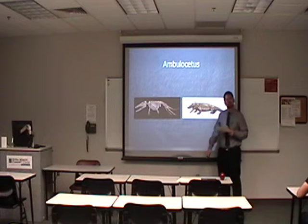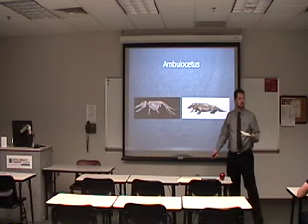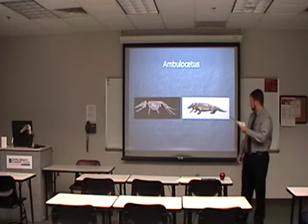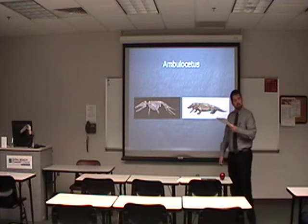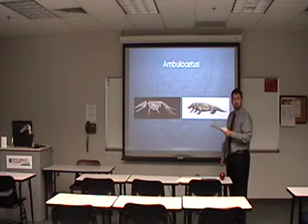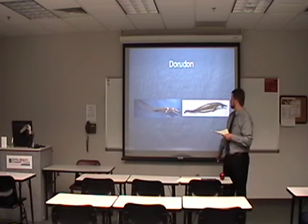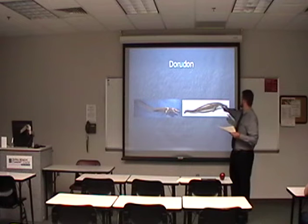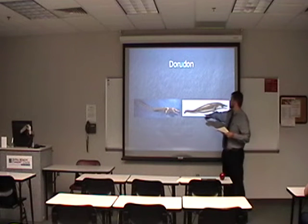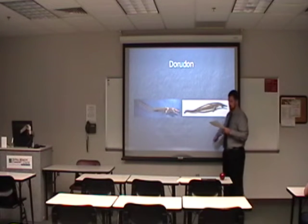We think it lived a lot like hippopotamuses do now — most of its life in water. It had a four-chambered heart, warm blood, gave live birth, and suckled. Then you have the Dorudon, which is much larger with much more reduced hind legs, also warm-blooded.